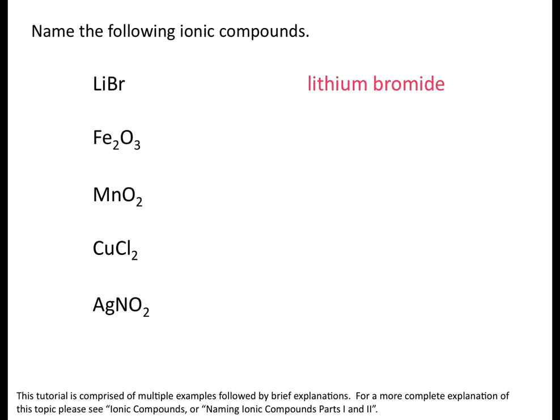Looking at our next example, make sure you notice that iron is a transition metal. Whenever you're naming an ionic compound that includes a transition metal, you need to include a Roman numeral indicating the charge of the transition metal ion. Looking at the formula Fe2O3, oxygen ions have a charge of minus two, and with three of them that's a total of minus six, so each iron ion must have a charge of plus three. This compound would be iron(III) oxide.